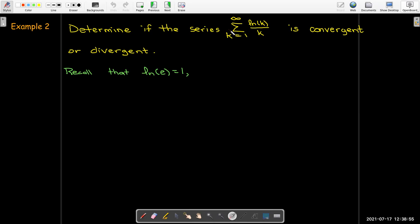So how does it compare to 1 over k? Well, natural log has base e. So natural log of e equals 1. And e is about 2.7. And the natural log function is increasing. So what does that mean?